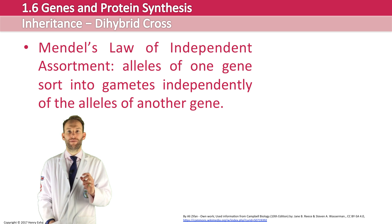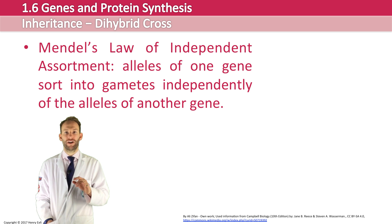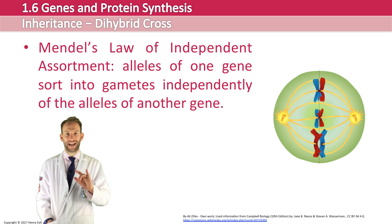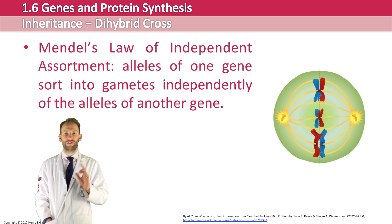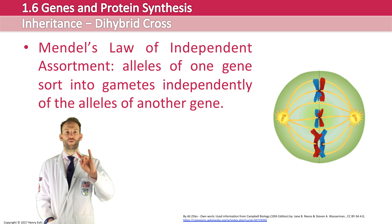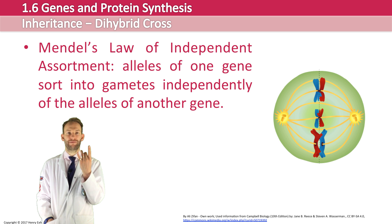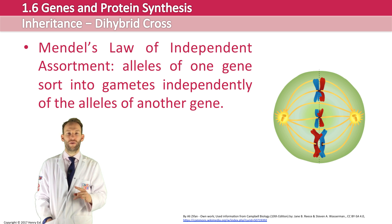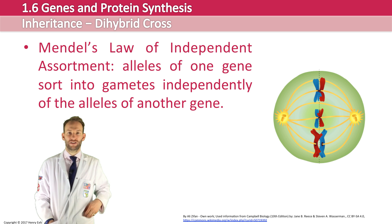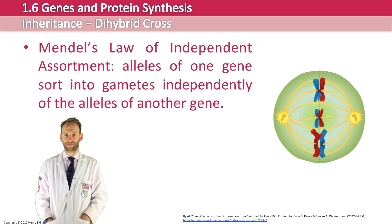We now know about this through studying meiosis. Homologous pairs can arrange themselves either way around in metaphase 1, and this is true for each pair regardless of the others. Just because one chromosome of a pair is arranged a certain way doesn't mean the others are arranged the same way — they are all randomly and independently assorted.